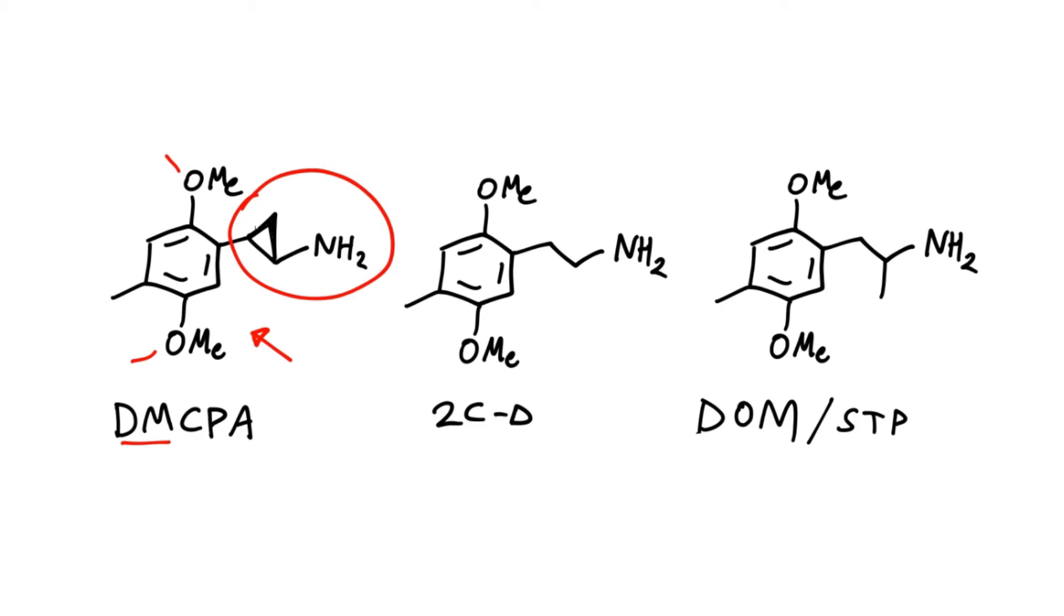You can see this is a conformationally restricted phenethylamine analogue. The fact that these carbons are tied up in a cyclopropyl ring means there are fewer conformations this side chain can adopt, and there's a bit more steric bulk in this position. It's related to these two other analogues, 2CD and DOM. In particular, compared to DOM, you essentially are just joining that methyl group up into a cyclopropyl ring. So these are probably the most closely related.